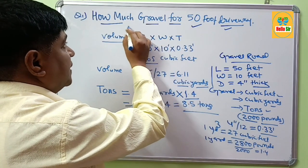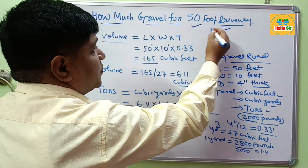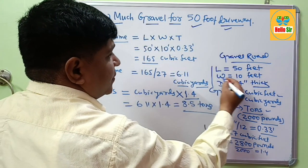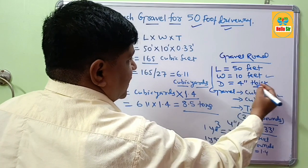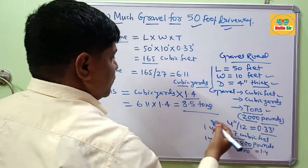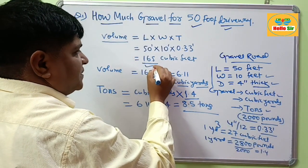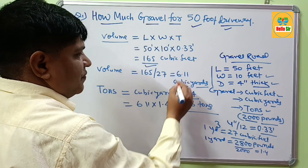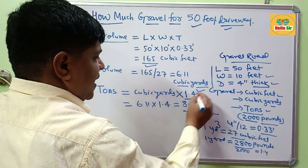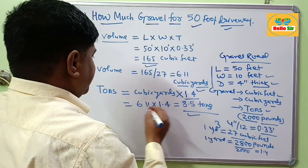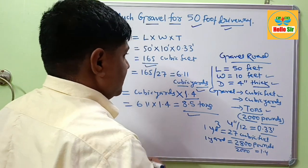This is the total gravel quantity required for a 50-foot driveway with a width of 10 feet and thickness of 4 inches. You need 165 cubic feet, 6.11 cubic yards, or 8.5 tons of gravel.